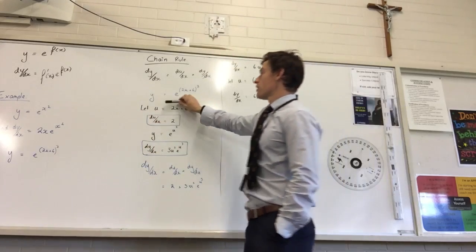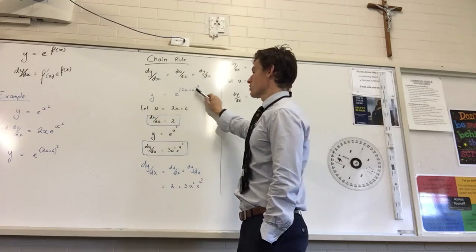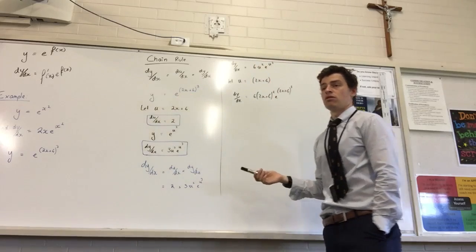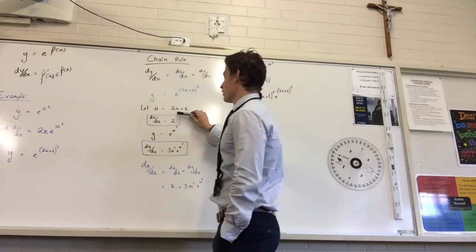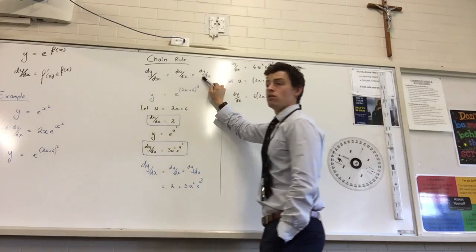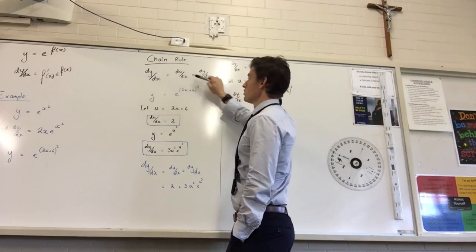Okay, so I'm using substitution to simplify my problem. So y equals e to the 2x plus 6 to the power of 3. All I've said is, well I'm going to let 2x plus 6 equal u. Does it have to equal u? You can equal whatever you want it to equal, doesn't bother.